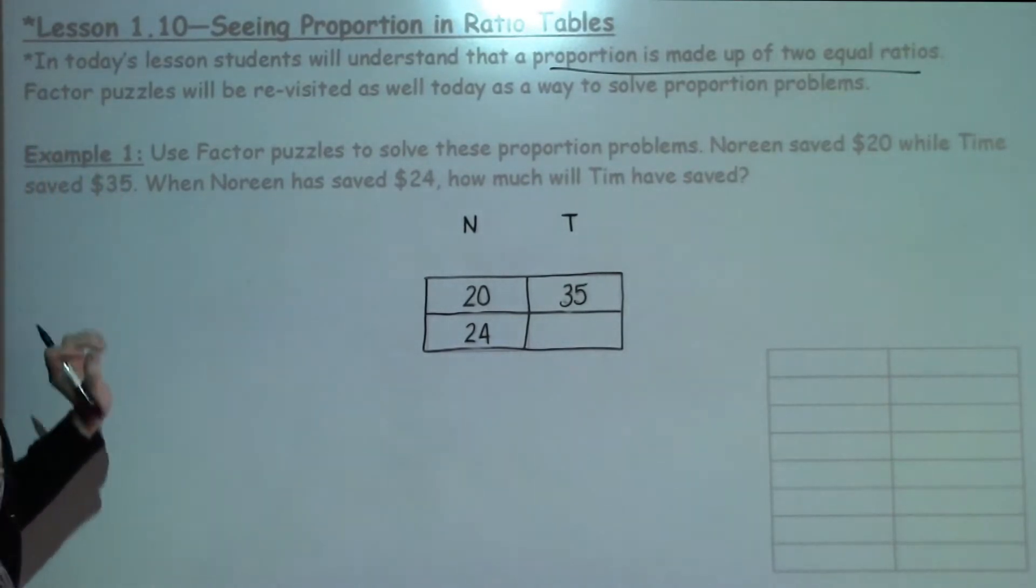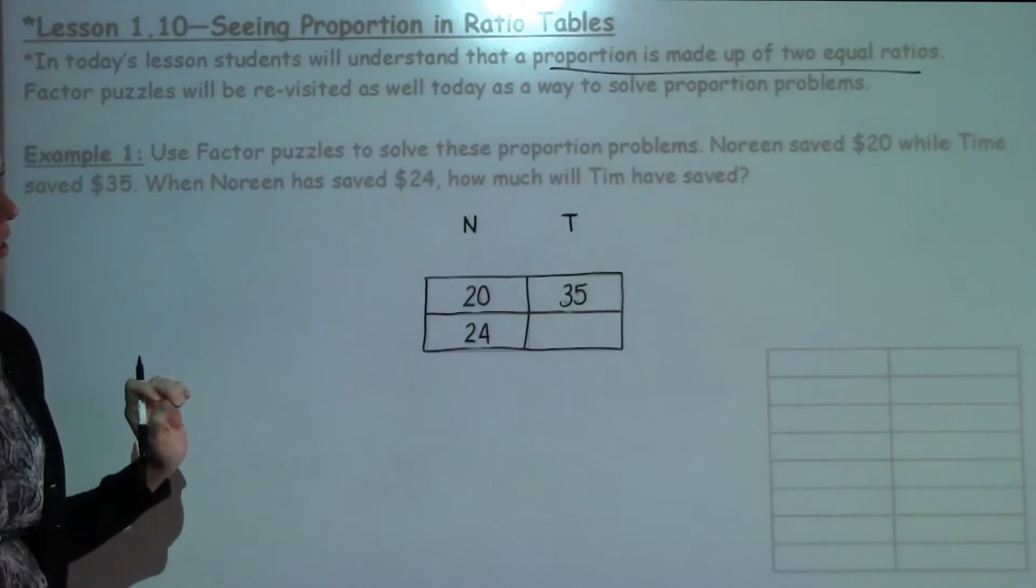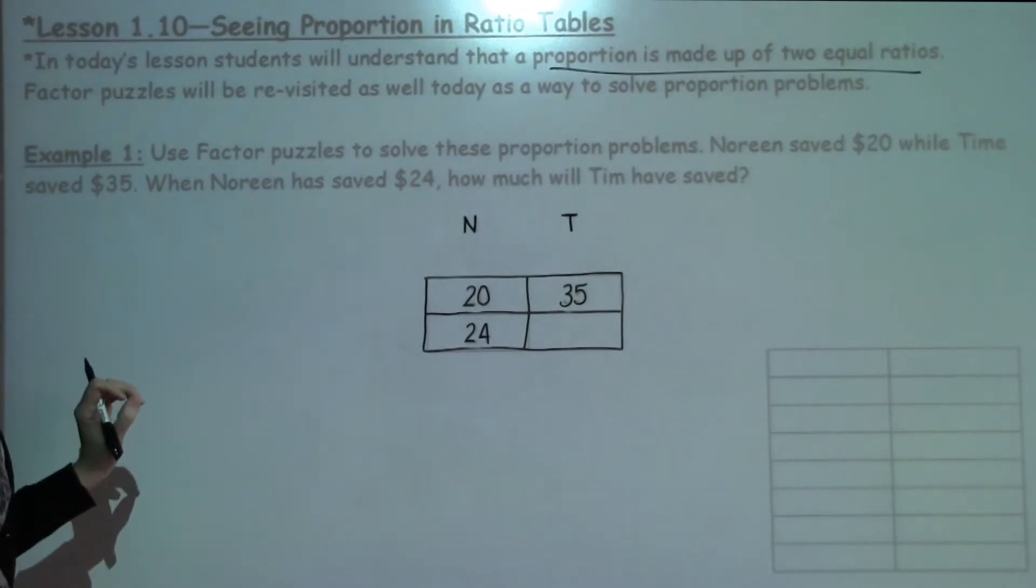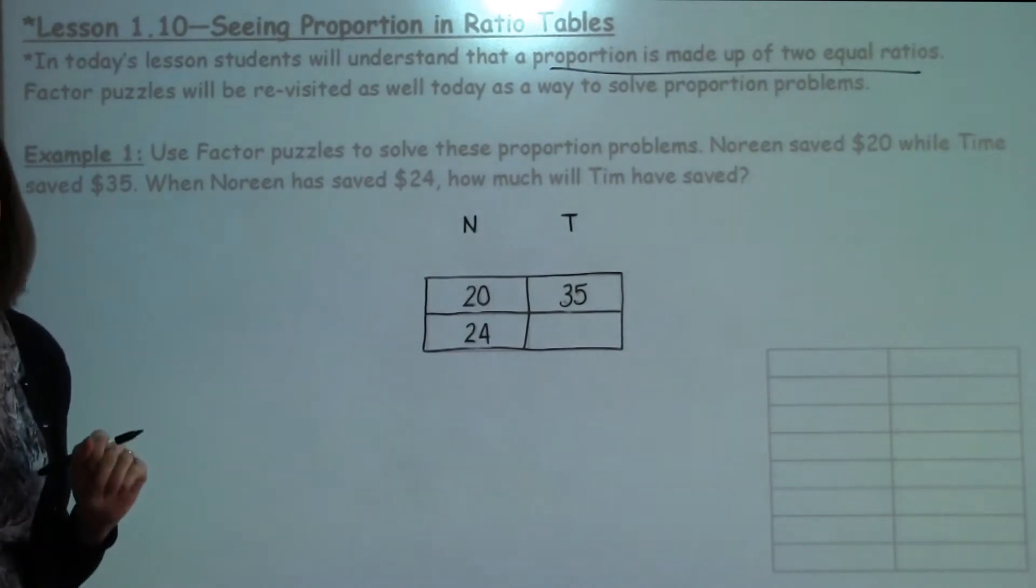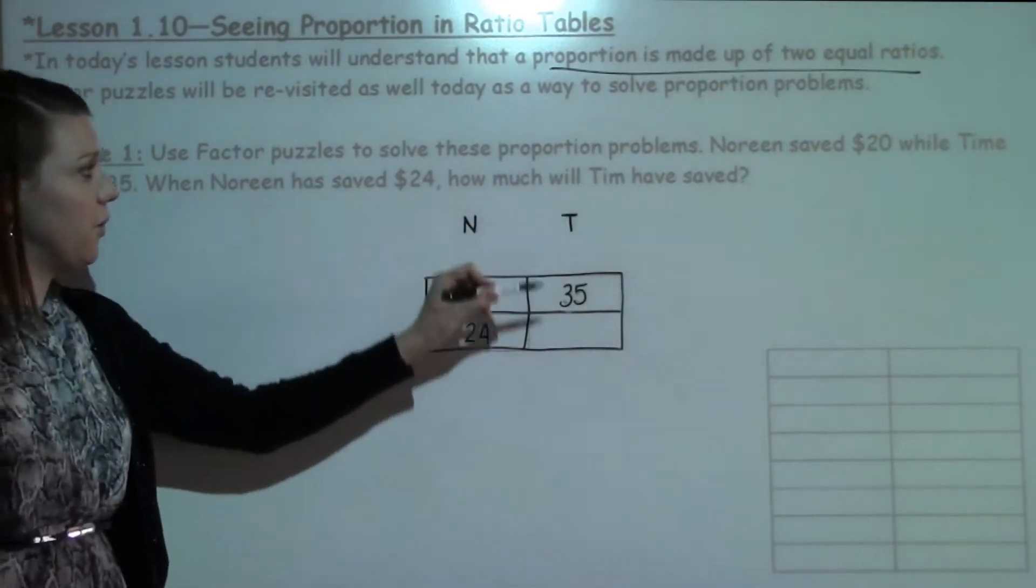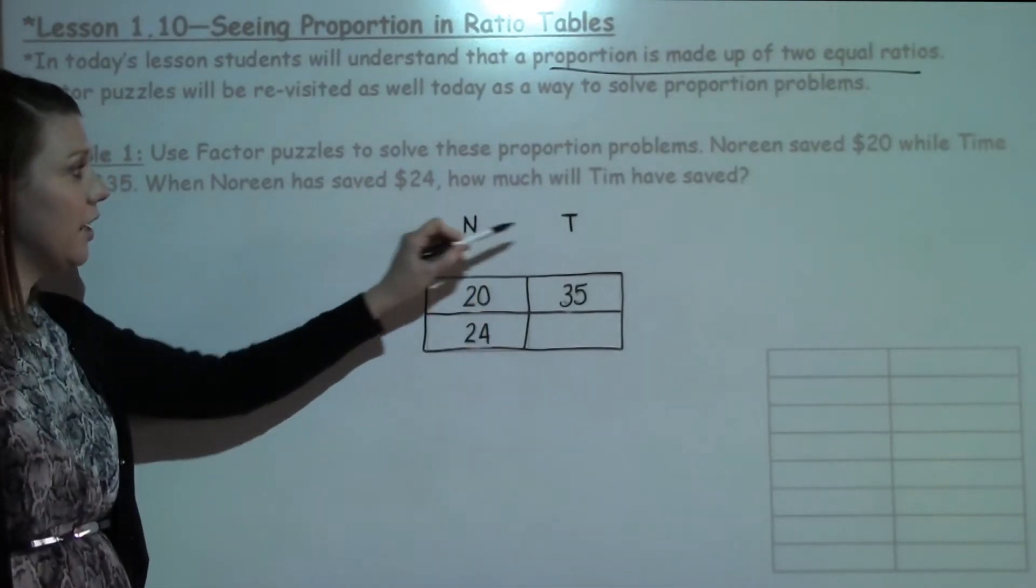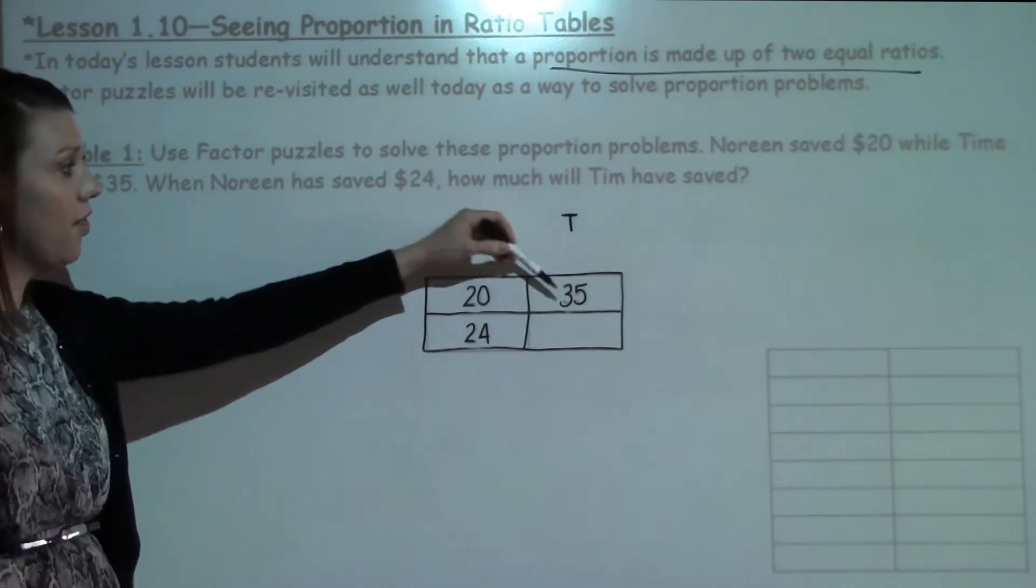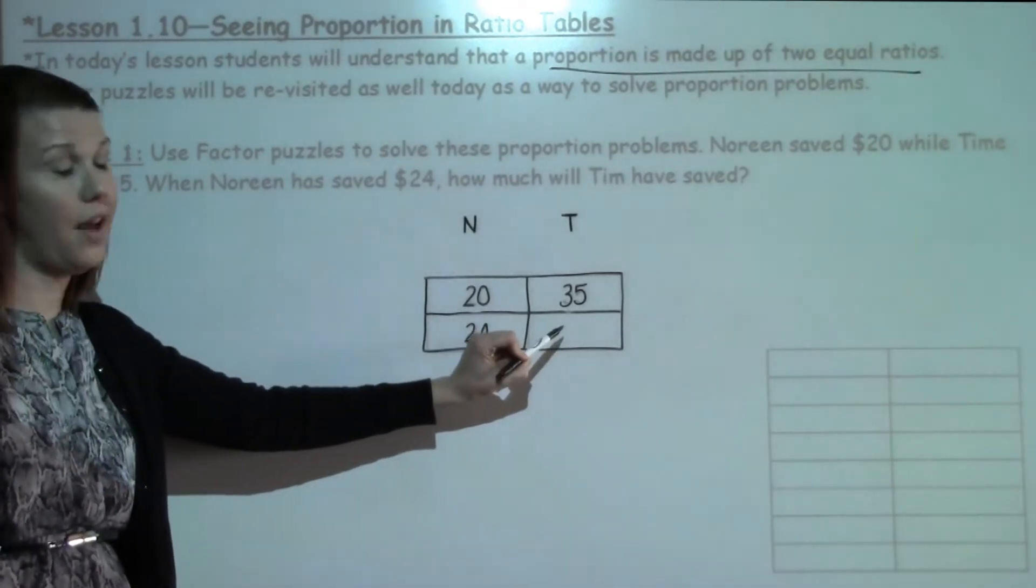So look at this factor puzzle we're going to solve using some information. It says Noreen saved $20 while Tim saved $35. When Noreen saved $24, how much will Tim have saved? Look at the factor puzzle we can see how these relate. We have Noreen and Tim already listed. We have their 20 and 35 which we already know. We've got 24 and then a missing value.